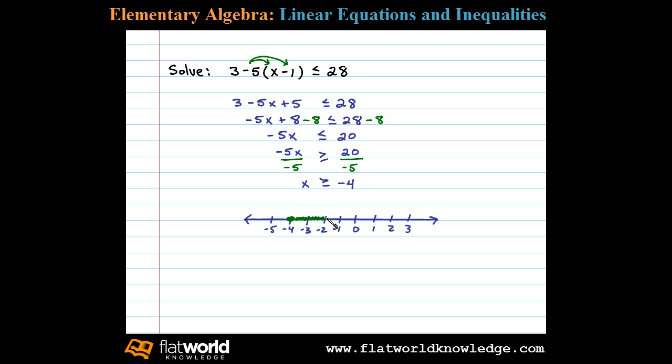So there's a graphical representation of infinitely many solutions. Now we can write the equivalent using interval notation. Since we have an inclusive inequality and we're including -4 in the solution set, we use a bracket to indicate that.